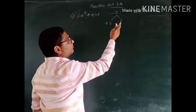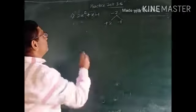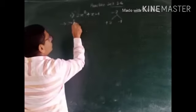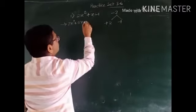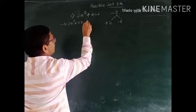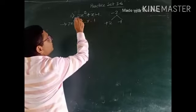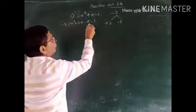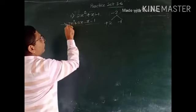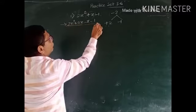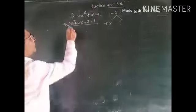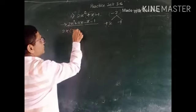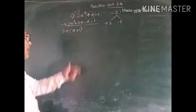We have to take these two numbers with the variable: 2x² + 2x - 1x + x - 2. This 3-term polynomial is now written as 4 terms. Now we have to make groups of 2.